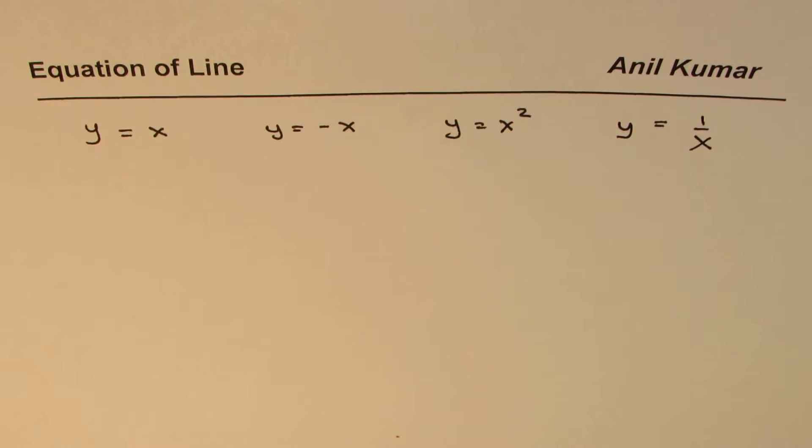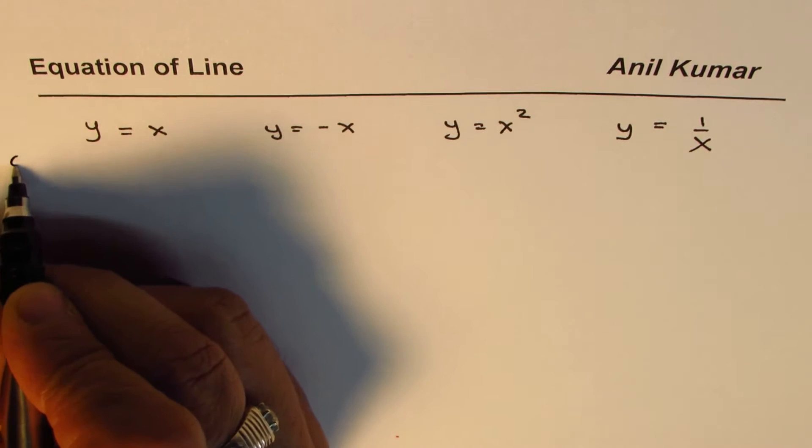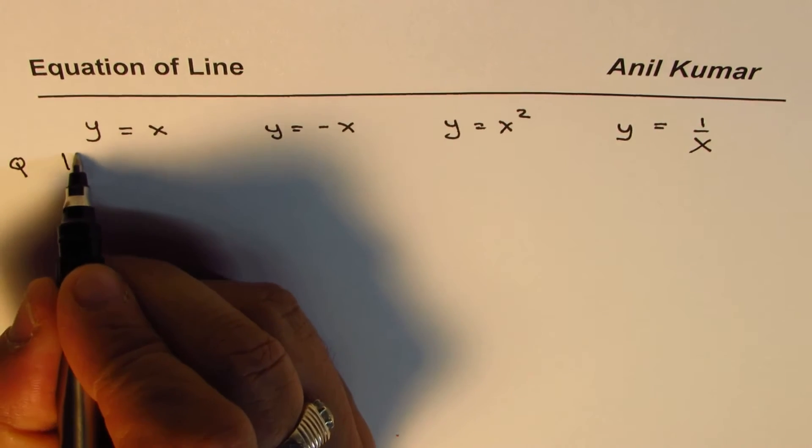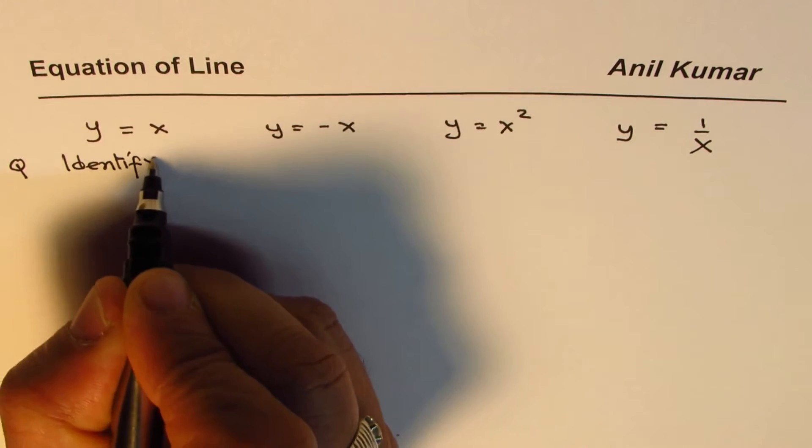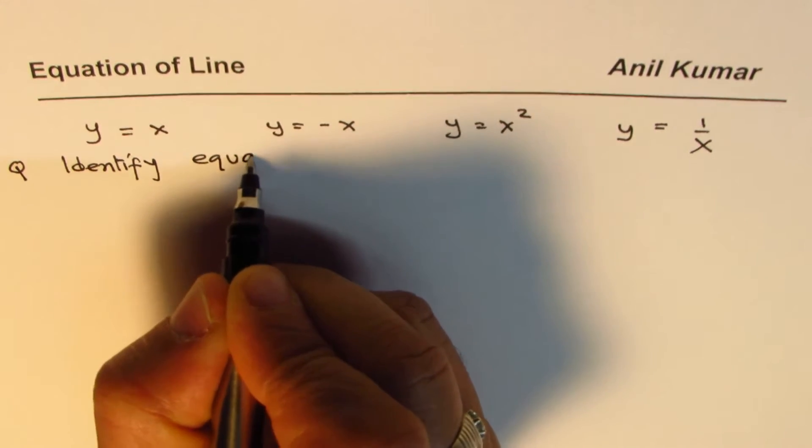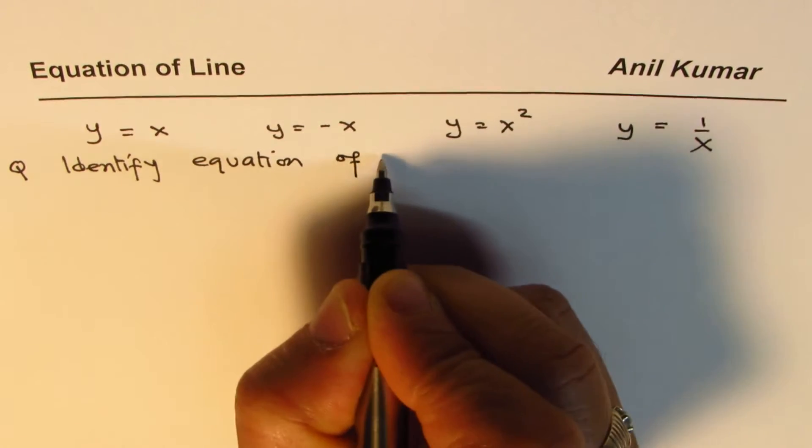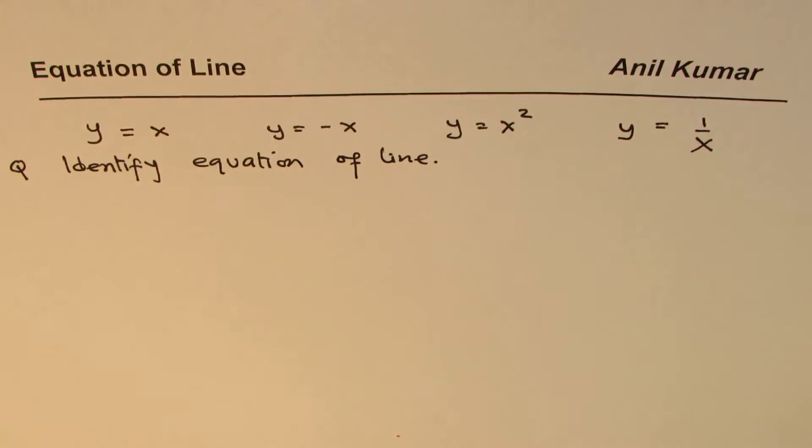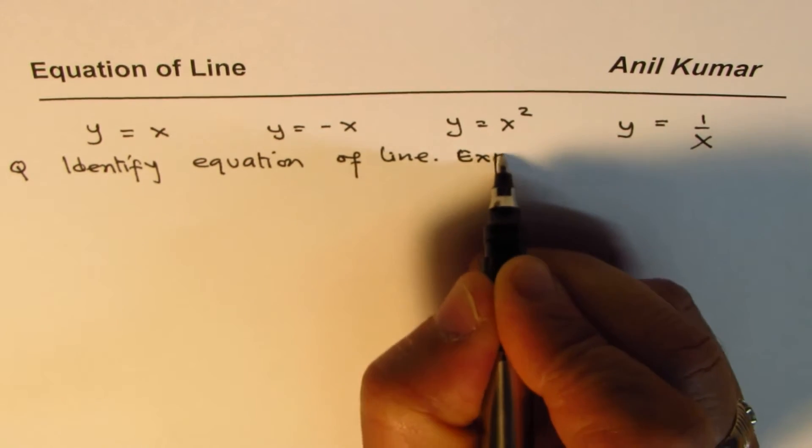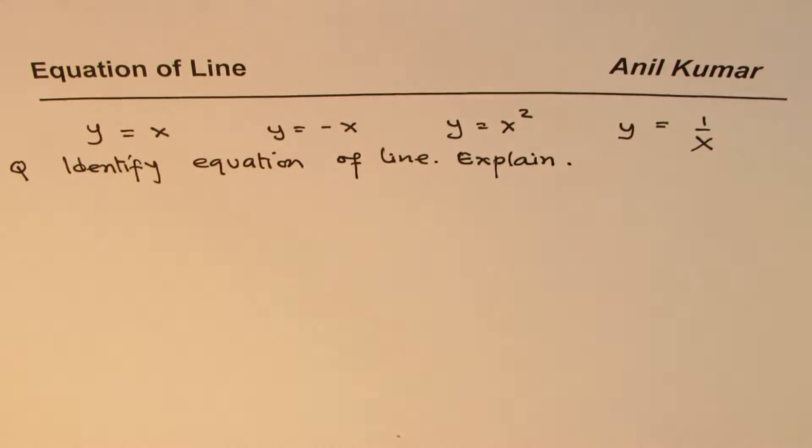So these are four equations given to you, and you want to know which represents a line and which do not, and we also want to understand why. So the question here basically is: identify equation of line and explain your answer.